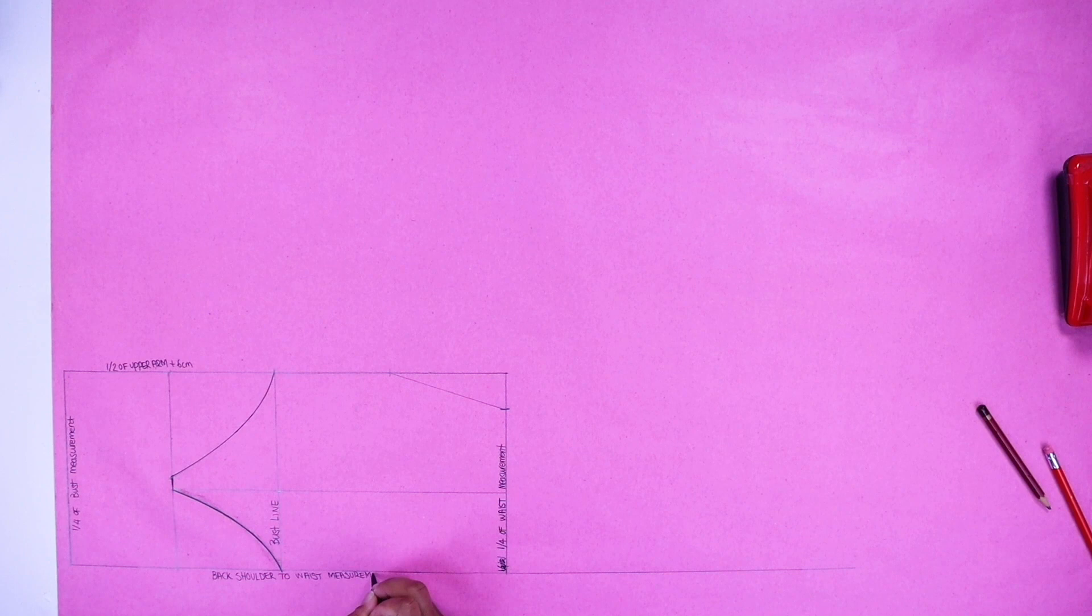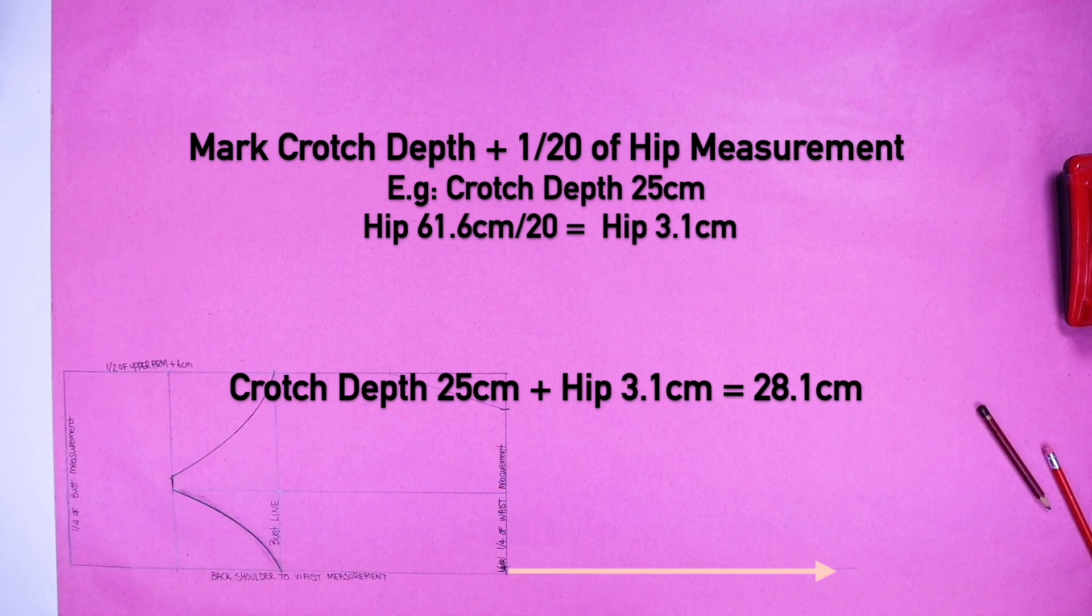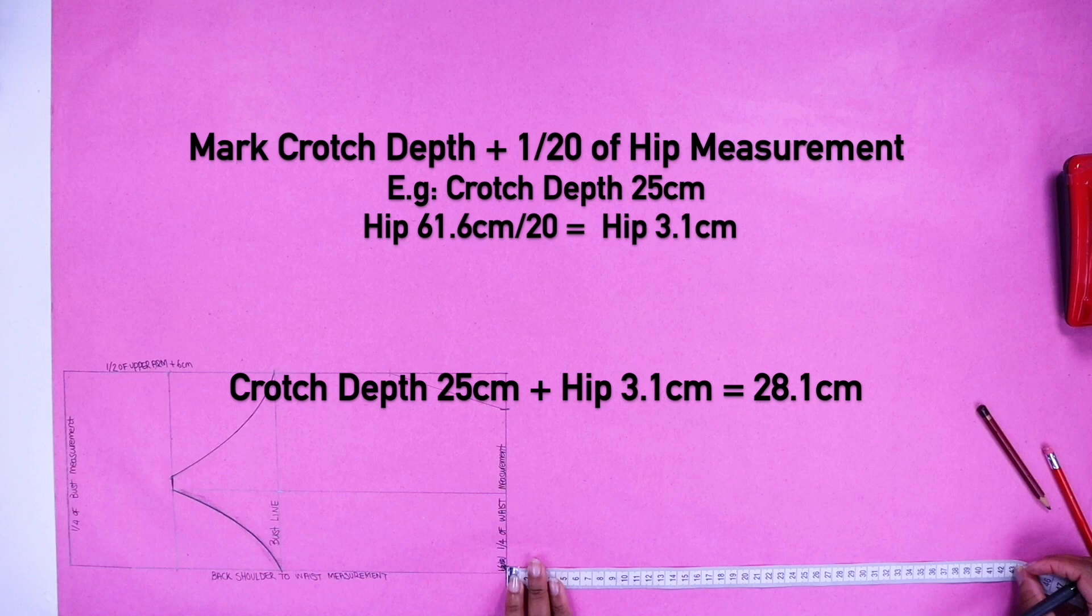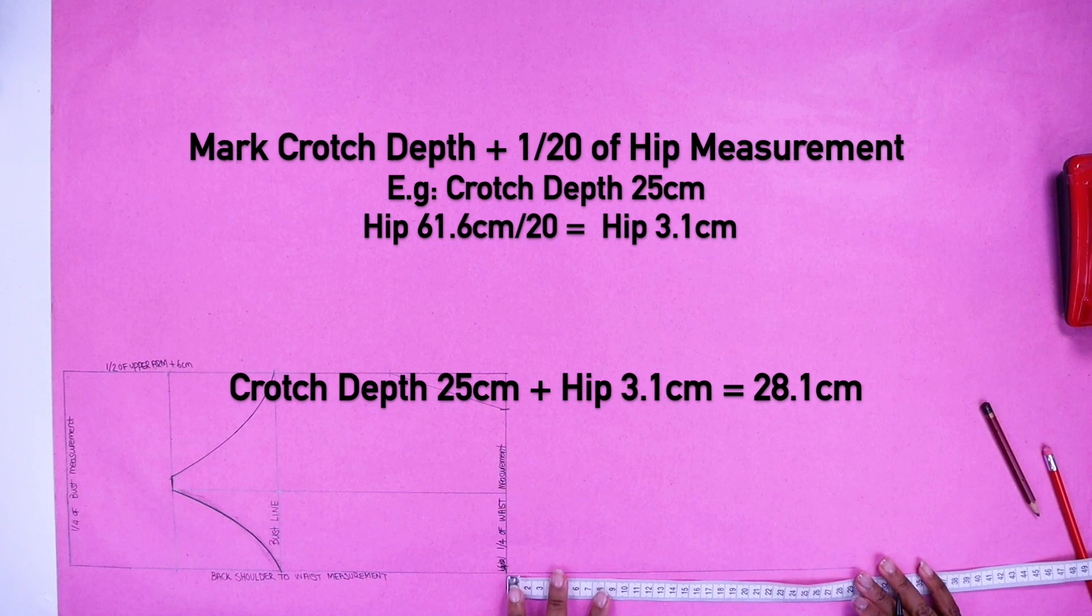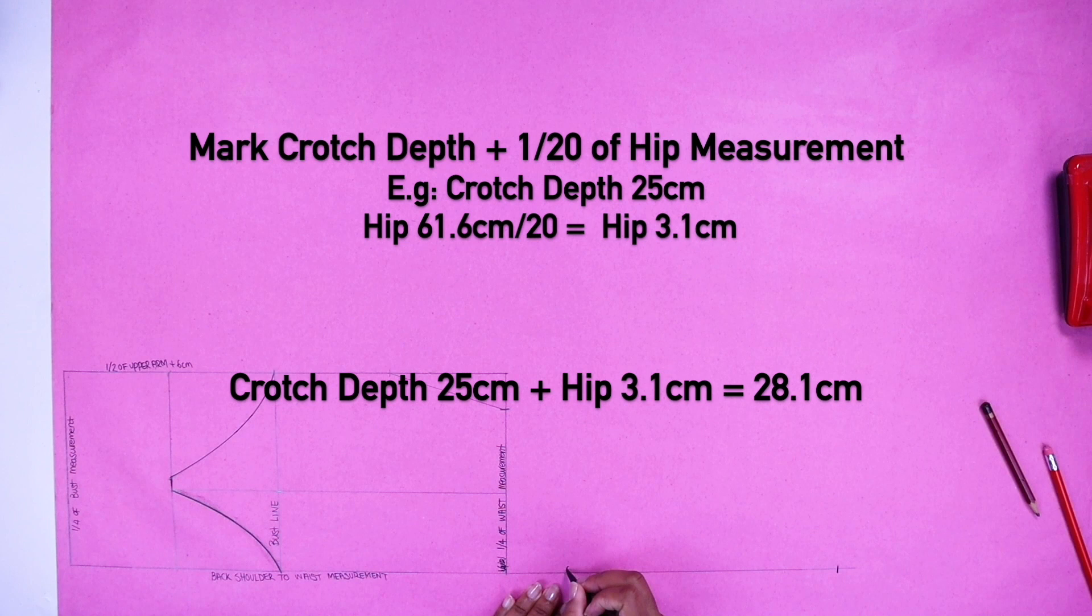For this step, you need to do the following calculation that is shown on the screen. So you need your crotch depth and then get your hip measurement, divide that by 20. Whatever is equal to your hip measurement that you divide by 20, that's how much you need to add with your crotch depth measurement. So mine is 28.1 centimeters.